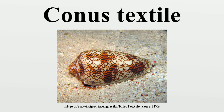Conus textile, common name the textile cone or the cloth of gold cone, is a venomous species of sea snail, a marine gastropod mollusk in the family Conidae, the cone snails, cone shells or cones. Like all species within the genus Conus, these snails are predatory and venomous. They are capable of stinging humans; therefore live ones should be handled carefully or not at all. The conotoxin of this species is extremely dangerous to humans.